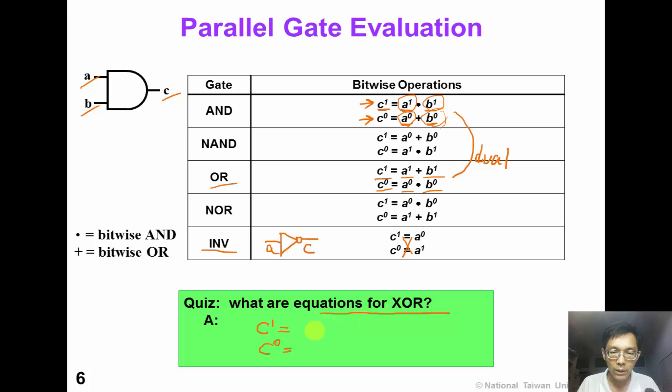Have you got it? Yes. For exclusive OR gate, we have two scenarios where C1 can be 1. That is, A is 1 and B is 0, or A is 0 and B is 1.